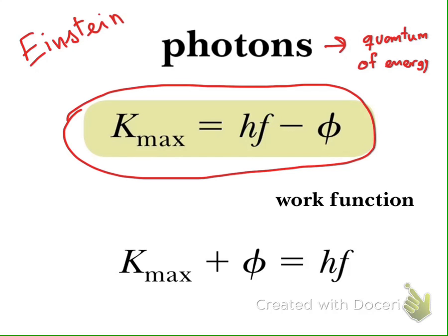Every kind of electromagnetic wave will have discrete energy. He calls this quantum of energy of light the photon. Each photon will have energy equal to HF. This equation means the energy carried by one photon.